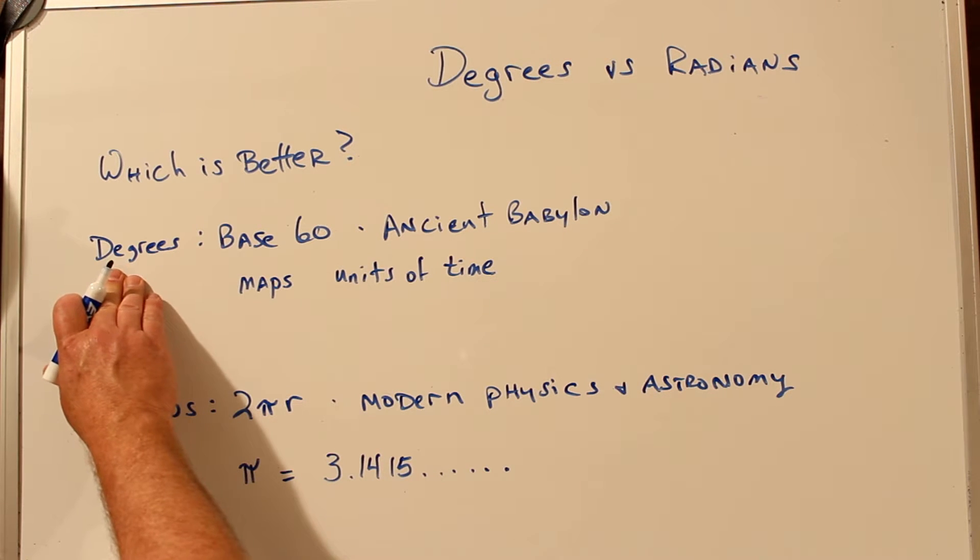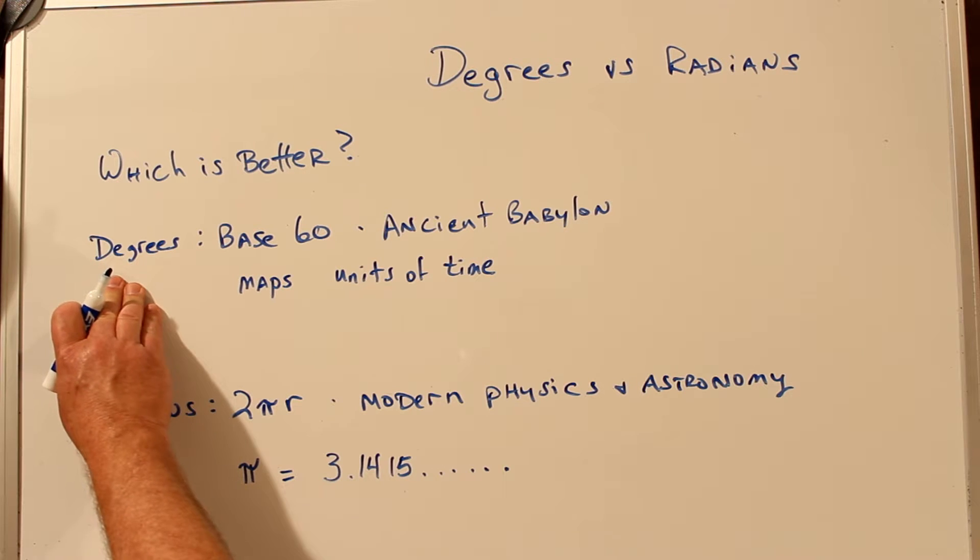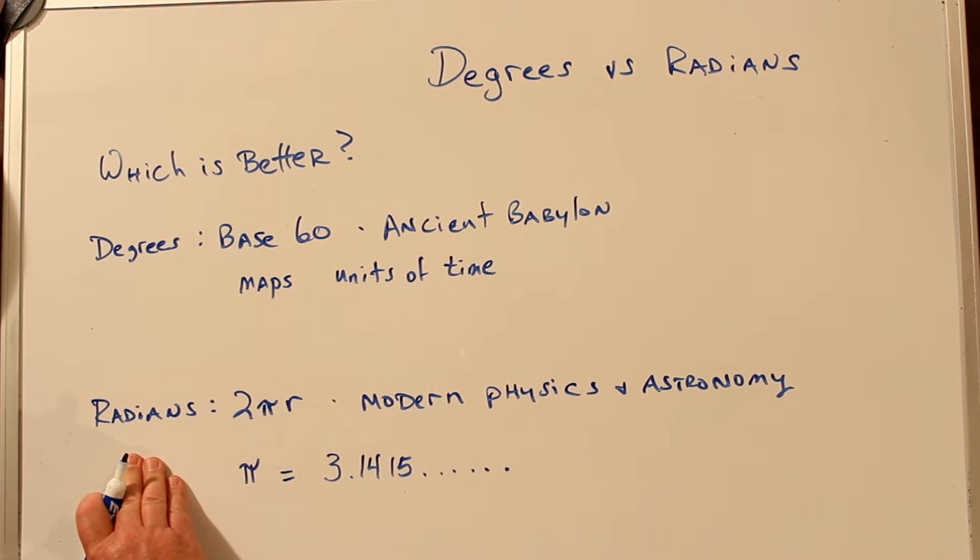So if you're using maps, units of time, things already in existence, degrees would be better. If you're trying to figure out things very large, very small, or in the sciences, you may find radians are the better unit to use.